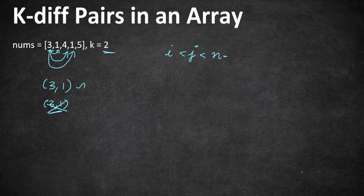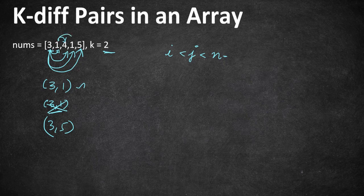Three minus 5 gives a difference of 2, so we also add the pair (3, 5). Starting from 1, none of the remaining combinations — (1,4), (1,1), (1,5), (4,1), (4,5), or (1,5) — have a difference of 2. So we get only two unique pairs whose difference is k, and the result is 2.